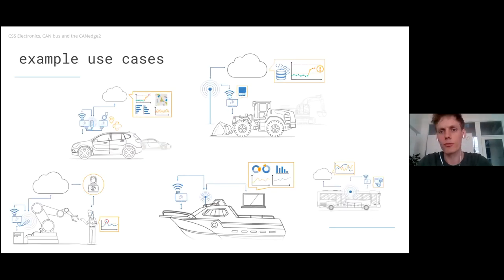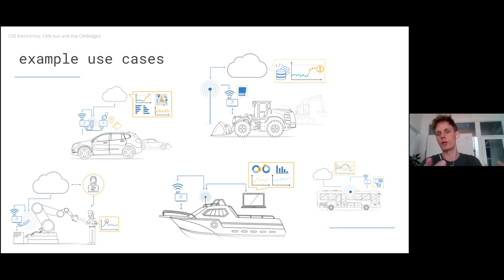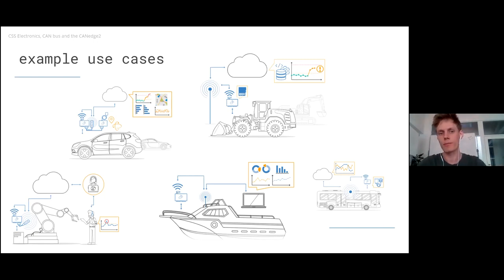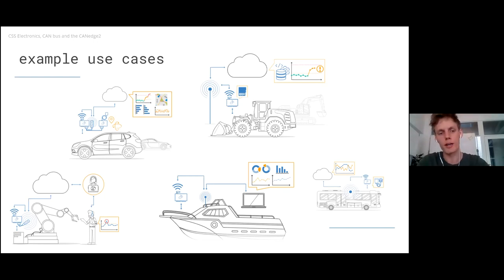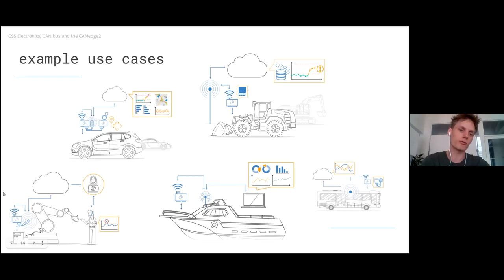There are many use cases: warehouses, agriculture — monitoring agricultural vehicles across a harvest season — automotive OEMs monitoring and debugging equipment in cars, ships and boats in maritime vessels, heavy-duty trucks and transit buses, and industrial automation like robotics.